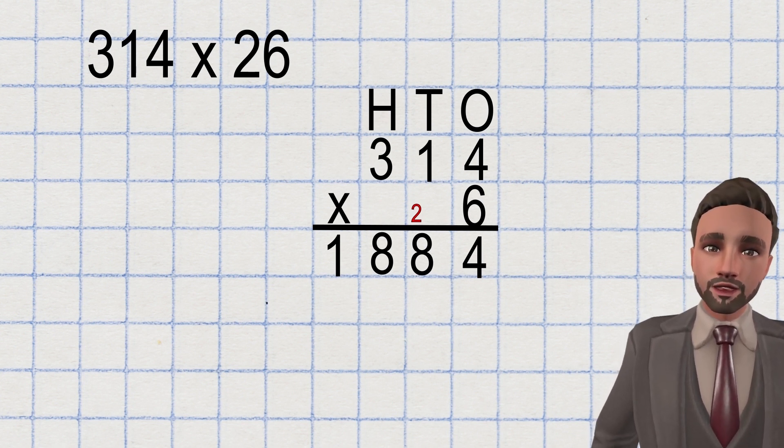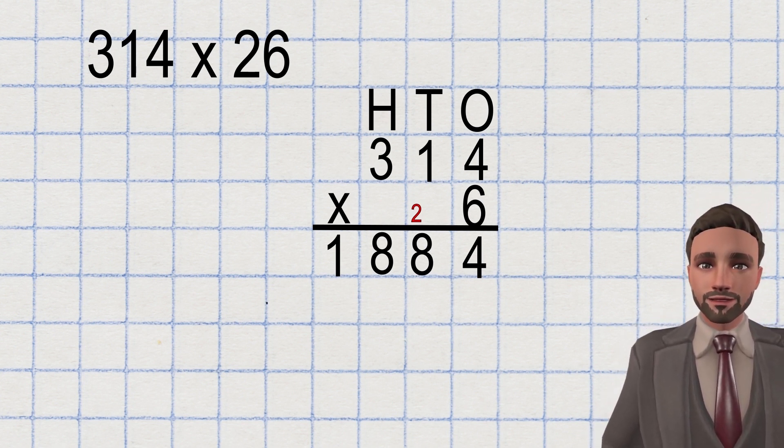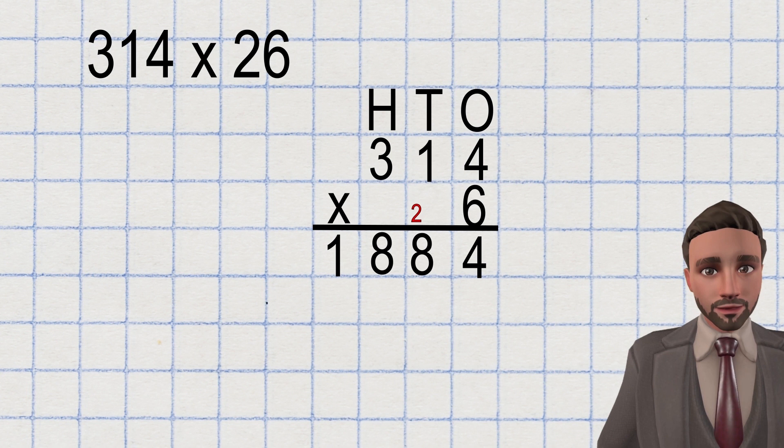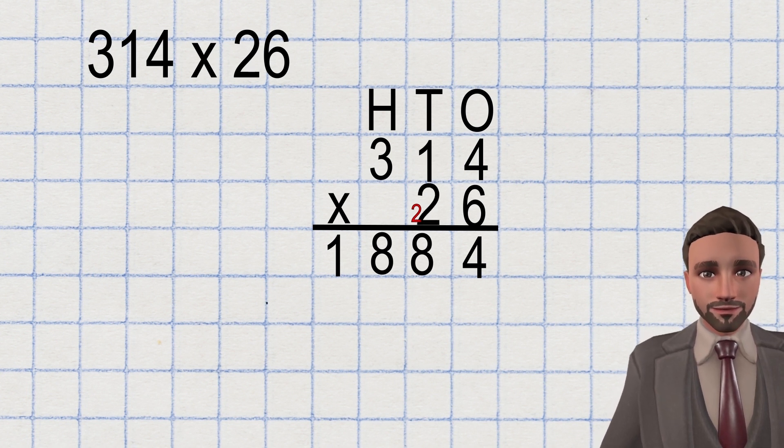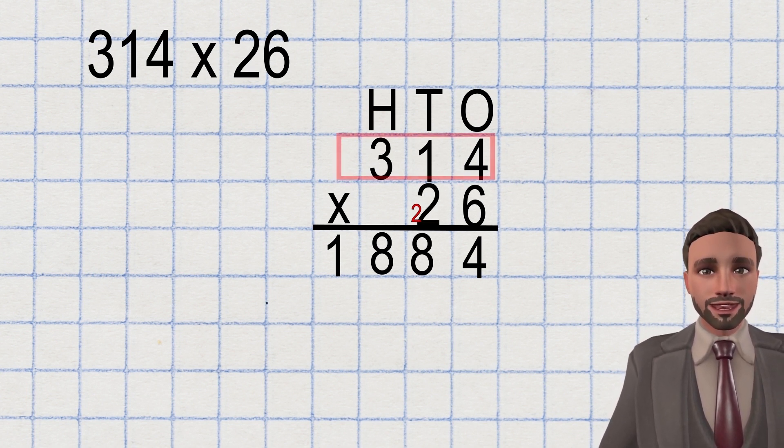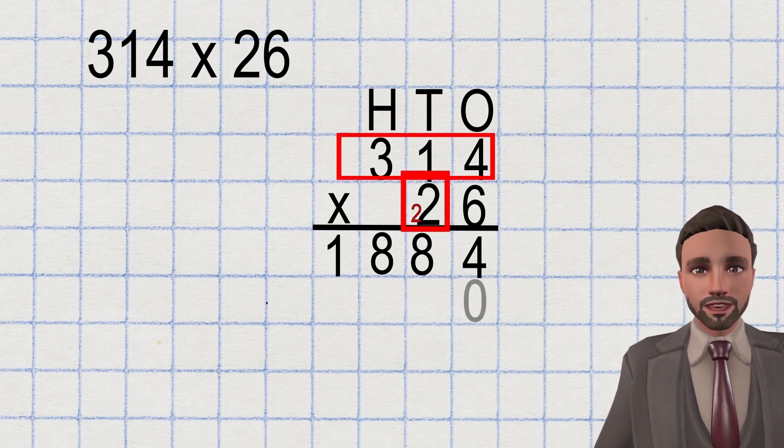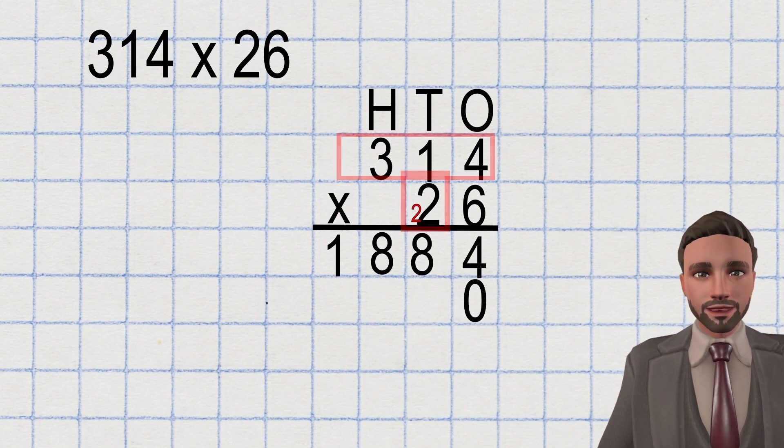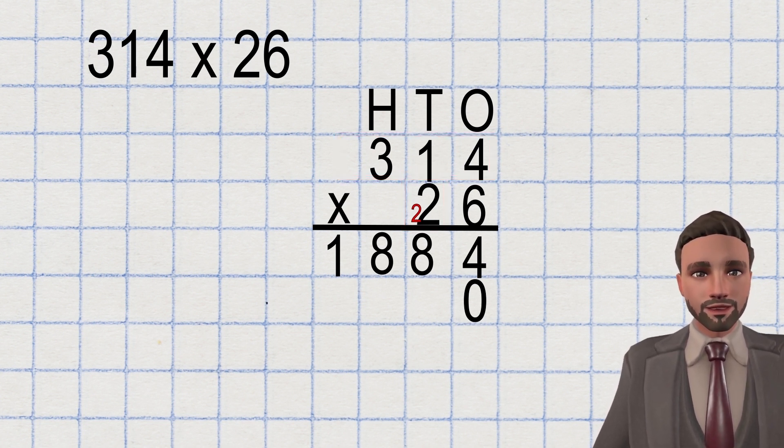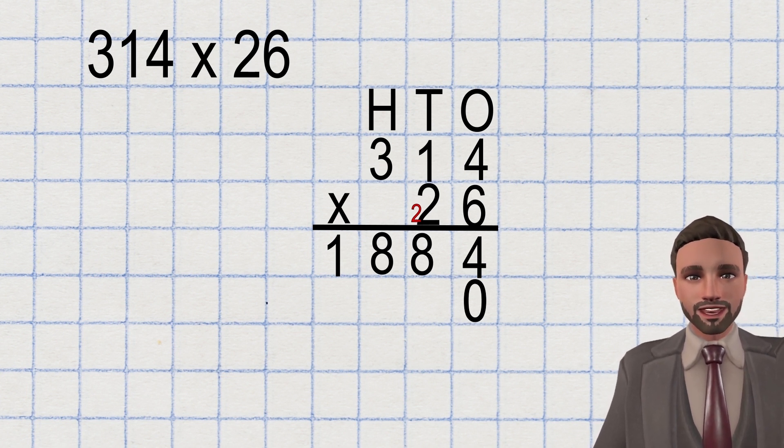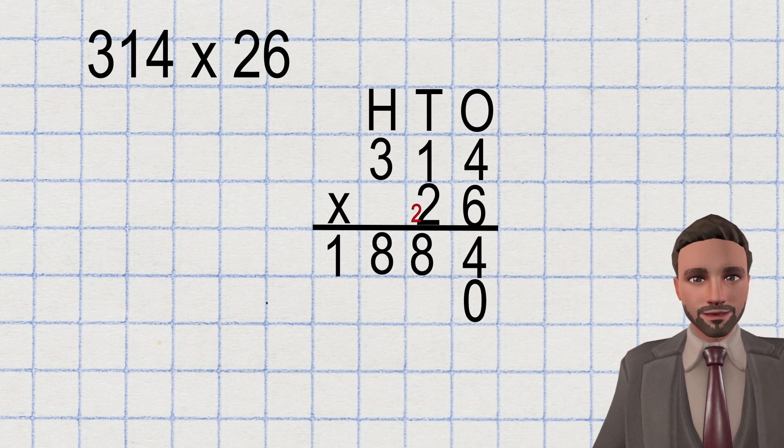If this was just multiplying by one digit we'd be finished, but it's not. Remember we have this 20. Now we must multiply all the digits in the top row by 20. To make this easy, we place a zero in the ones column. Then all we need to do is multiply by 2 and place our product in the column which is one space to the left. This is because even though we are multiplying by 2 in our heads, in reality we are multiplying by 20.